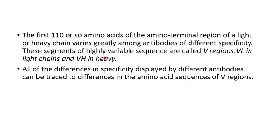These segments are highly variable sequences called the V region, or variable region. Variable regions are found in both the light chain and the heavy chain. All the differences in specificities displayed by different antibodies can be traced to differences in the amino acid sequence of the variable region — if one antibody differs from another, its variable region differs, not the constant regions.